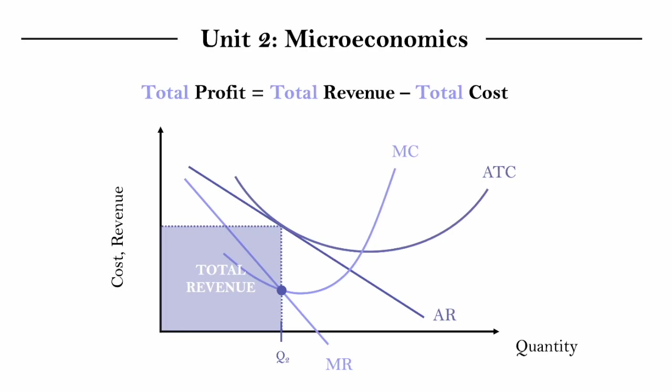But if we try to do that, we'll actually find that we end up at the same point as where we are trying to figure out total revenue, because our AR happens to be equal to our AC at this point, meaning our total revenue is actually equal to our total cost.